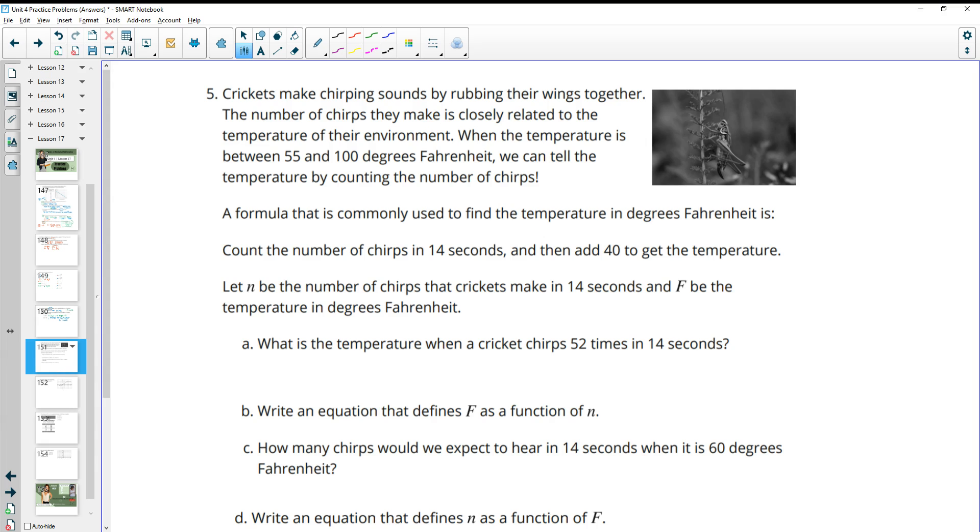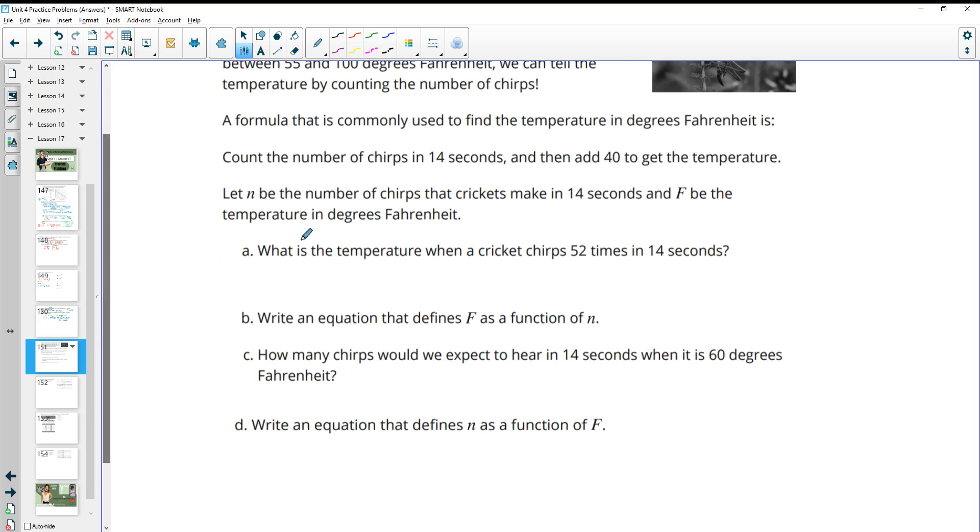Number 5, crickets make chirping sounds by rubbing their wings together. The number of chirps they make is closely related to the temperature of their environment. When the temperature is 55 to 100 degrees Fahrenheit, we can tell the temperature by counting the number of chirps. Count the number of chirps in 14 seconds, then add 40 to get the temperature. Let n be the number of chirps that they make in 14 seconds and F be the temperature in degrees Fahrenheit. So what is the temperature when a cricket chirps 52 times? And remember, this we don't really need to know. This is just the time period. So in 14 seconds, we take that number of chirps and then we add 40. So this is saying that the temperature is 92 degrees Fahrenheit if it's chirping 52 times in 14 seconds.